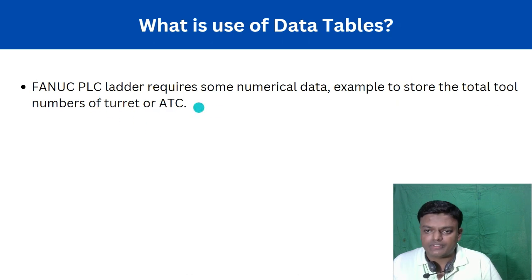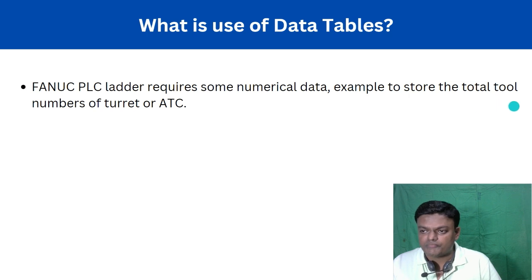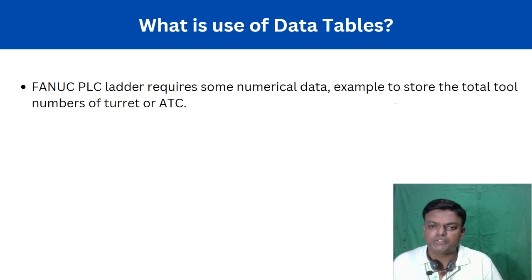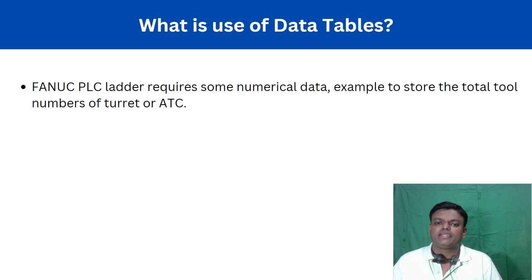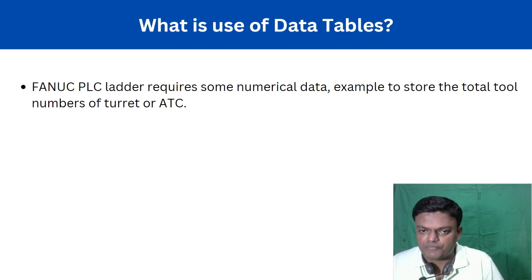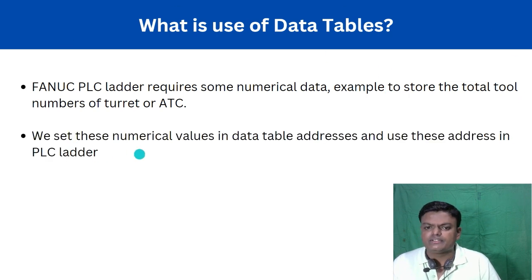Fanuc ladder requires some numerical data or values — for example, to store the total number of turret stations. Whenever you are using a 12-station turret, you have to inform the PLC ladder that you are using a total 12-station turret. That can be done through a data table address: select one data table address, put value 12 in that address, and that address is used in the turret ladder.